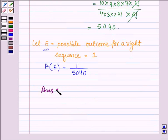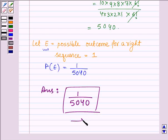Thus, our answer is: the probability of a person getting the right sequence to open the suitcase is 1/5040. So, this completes the session. Bye and take care.